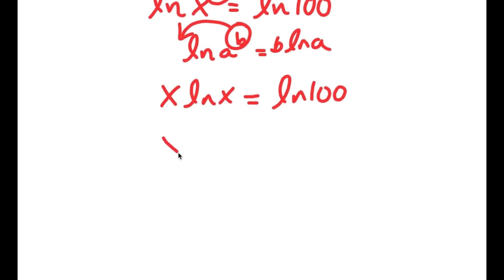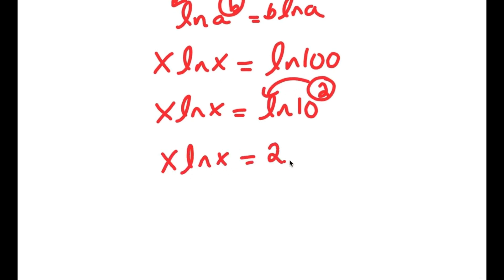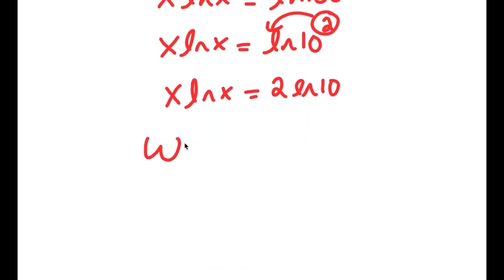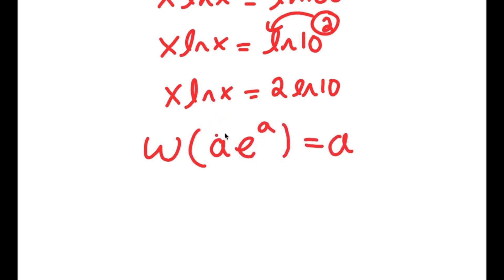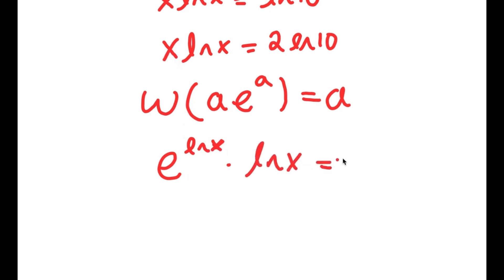ln 100 is the same as ln of 10 squared, so x times ln x equals ln 10 squared. Moving the 2 to the front, I get x times ln x is equal to 2 times ln 10. Now there's something called the Lambert W function: if I take the W Lambert function of something in the form a times e to the power of a, this equals a. So I'm going to rewrite x as e to the power of ln x, since e and ln cancel out, giving e to the power of ln x times ln x is equal to 2 times ln 10.